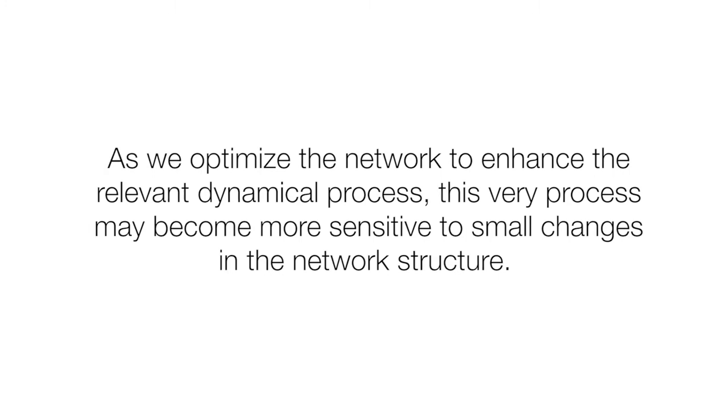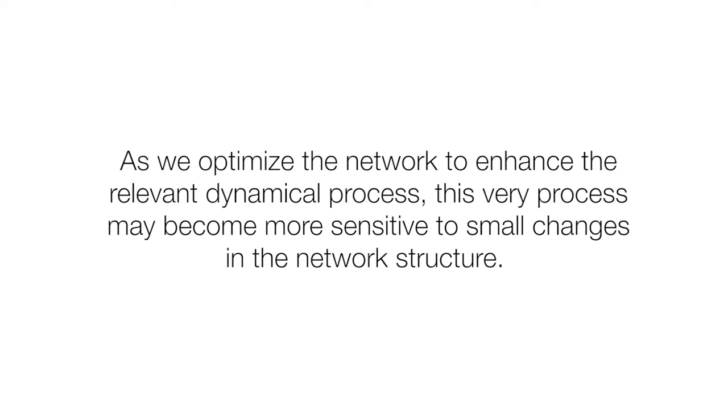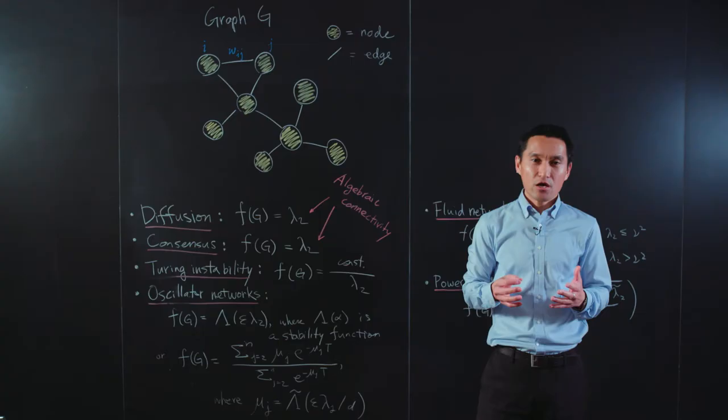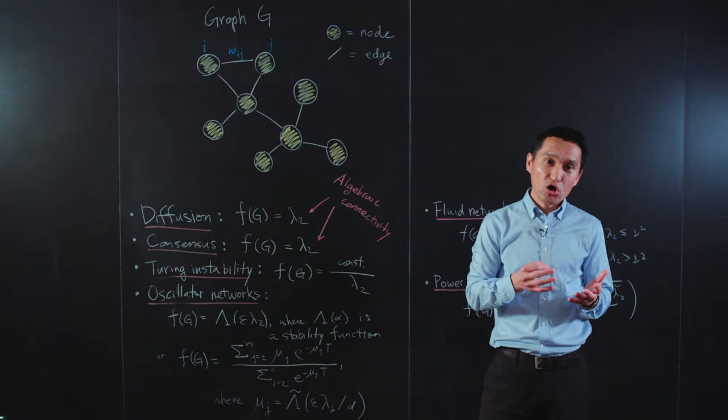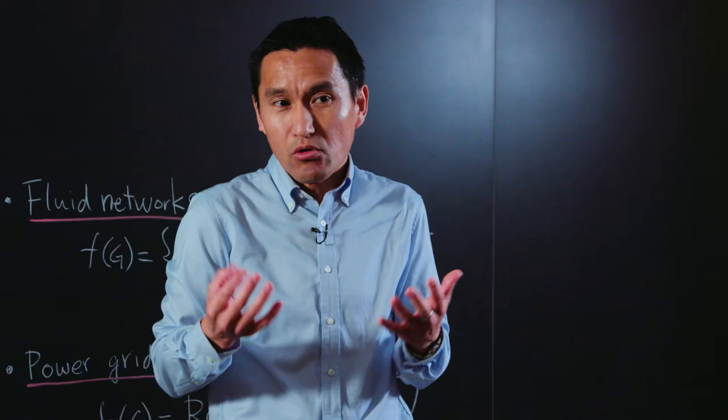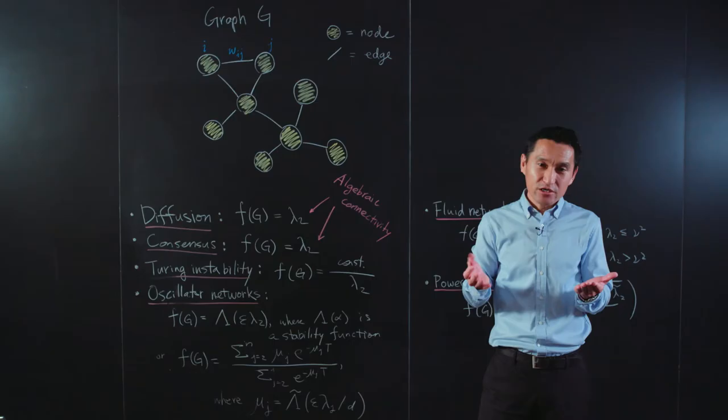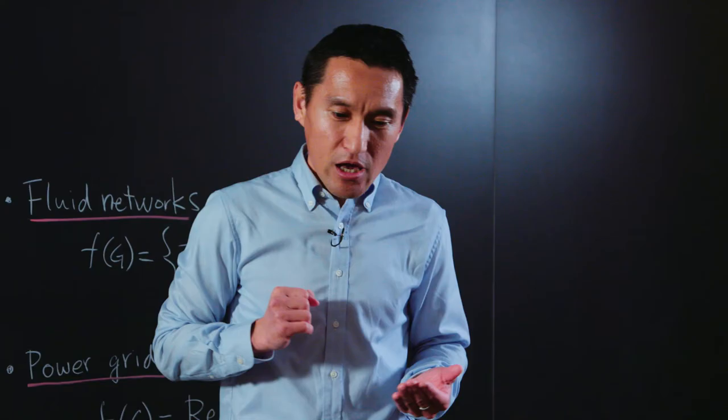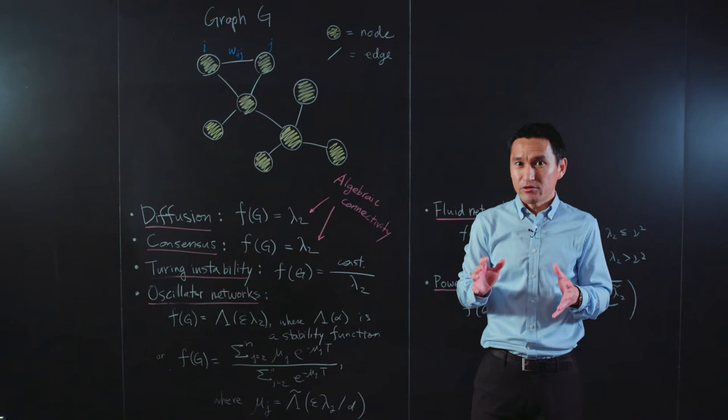And therein lies the rub. As we optimize the network to enhance the relevant dynamical process, this very process may become more sensitive to small changes in the network structure. The removal or addition of a node or an edge, or even a small change in edge weights, can cause significant dynamical changes.